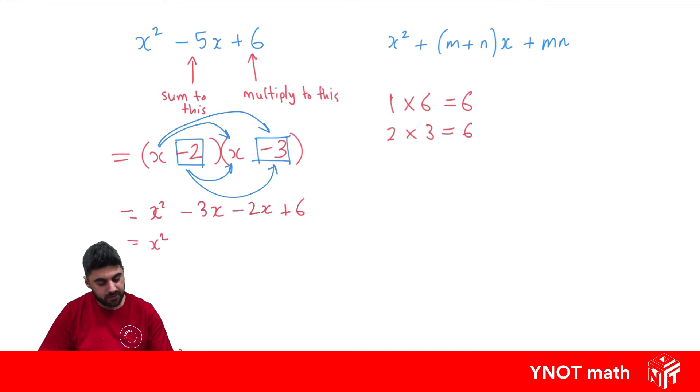We can add our like terms in the middle: -3x - 2x = -5x + 6. That's exactly what we started with, so we know that factorization is correct.